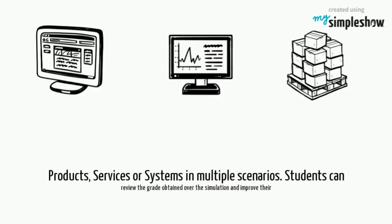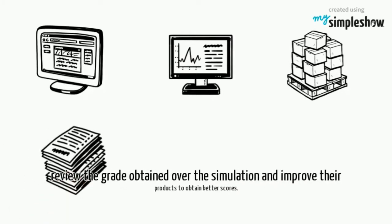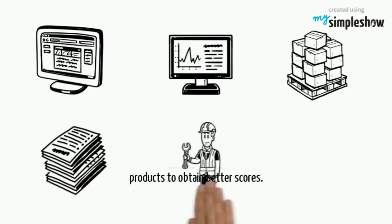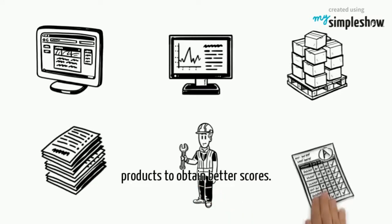GQ is a game that simulates the evaluation of users to different products, services or systems in multiple scenarios. Students can review the grade obtained over the simulation and improve their products to obtain better scores.